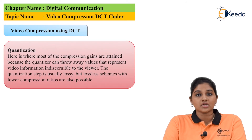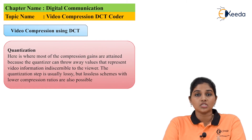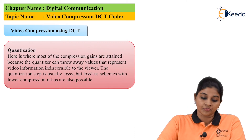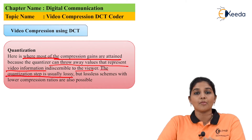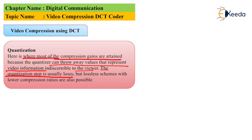The second step is quantization. Generalized quantization is basically approximation — in a digital system, if a figure having an analog value reaches 0.5, it will be approximated to 0 or 1. In DCT, most of the compression gains are obtained here because the quantizer can throw away values that represent video information invisible to the viewer. Quantization is usually a lossy stage, though lossless quantization is also available but results in lower compression ratios.